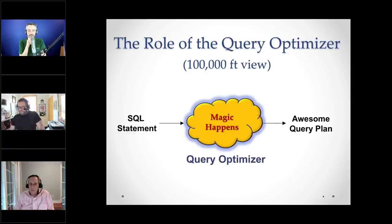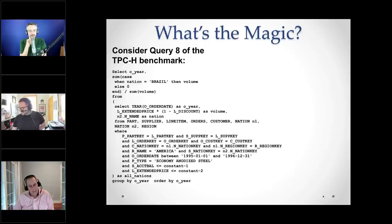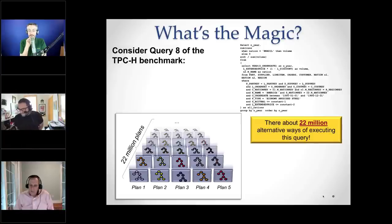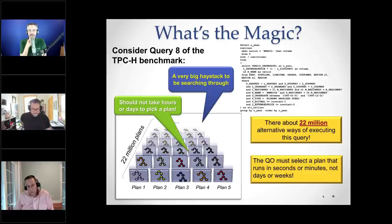Here's the general role of the query optimizer. A SQL statement comes in, gets fed through the parser, through the query optimizer, and then out comes a query plan. Here's TPCH, which involves a select with an embedded select over six tables — parts, supplier, line item, orders, customer, nation — and two copies of nation and region, with a bunch of joins between these tables. I calculated there are about 22 million ways of executing this query. So the goal of the query optimizer is to search through this huge space of alternative query plans and pick one that's going to execute the query as quickly as possible.